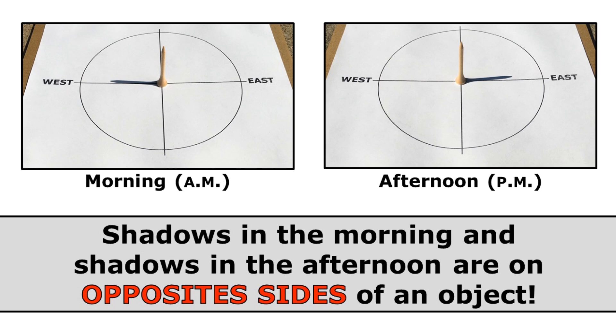But one of the most important things about shadows to understand is that shadows in the morning and shadows in the afternoon are on opposite sides of an object. And this is because the Sun is in the eastern sky all morning and in the western sky all afternoon.